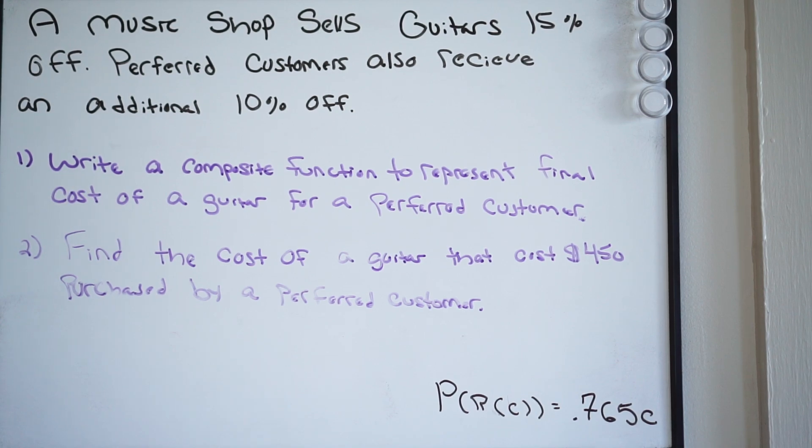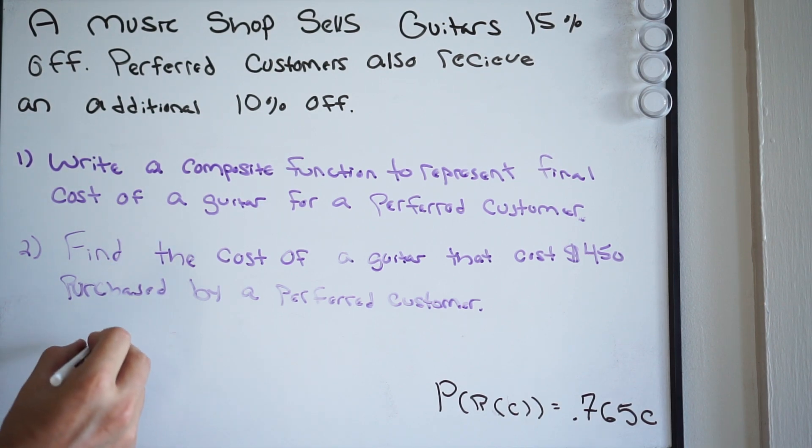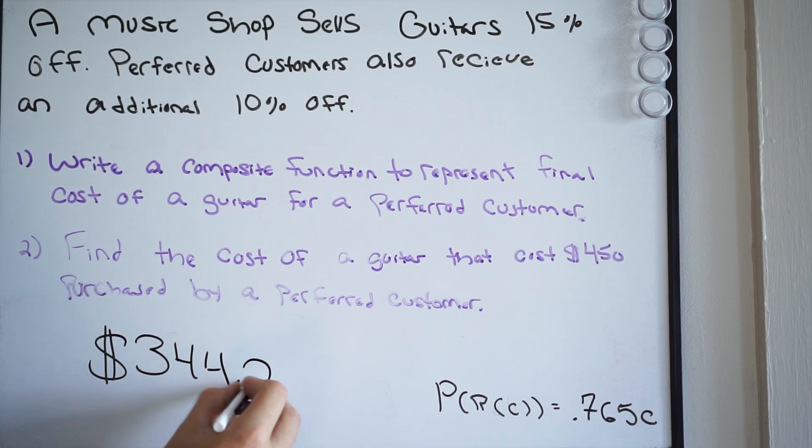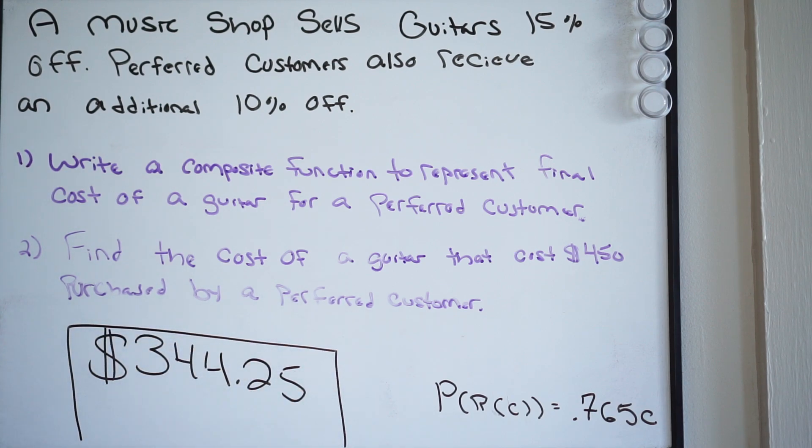So you're simply just going to do $450 times 0.765. And then you get $344.25. So $344.25. And this here is going to be your final answer.